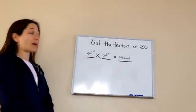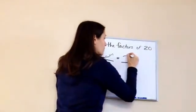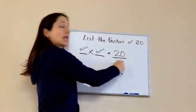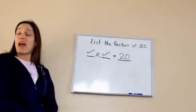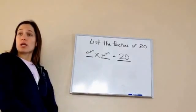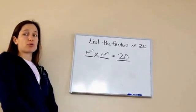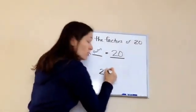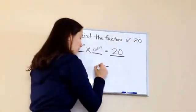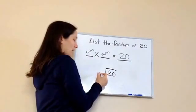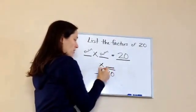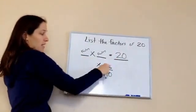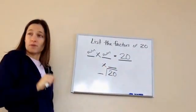If I tell you to list the factors of 20, what I'm asking you is to tell me what times what equals 20. What are the numbers that when you multiply them together equal 20? Another way you could do that is to use division, because basically I'm saying what times what.